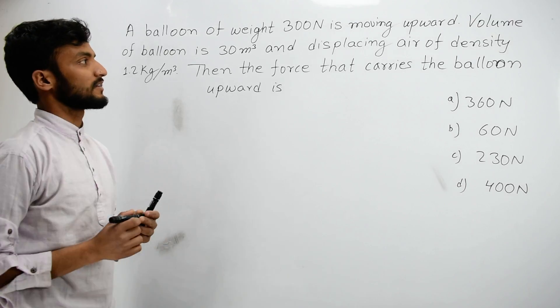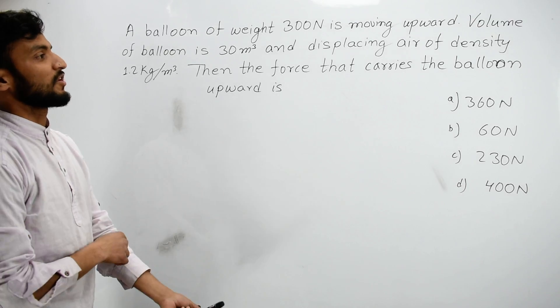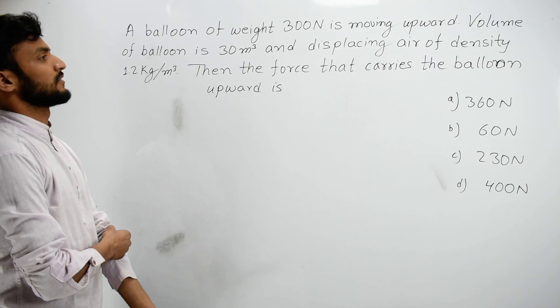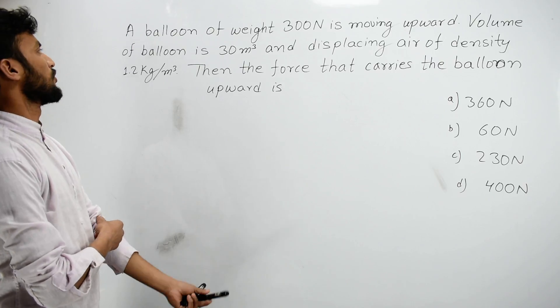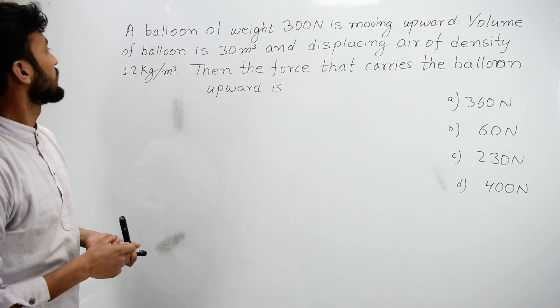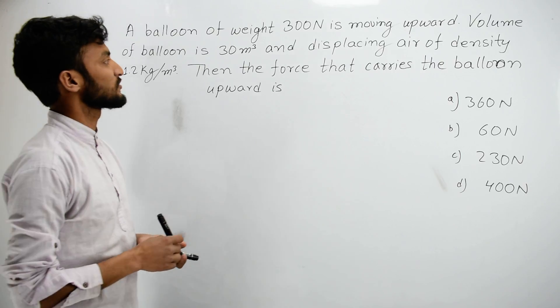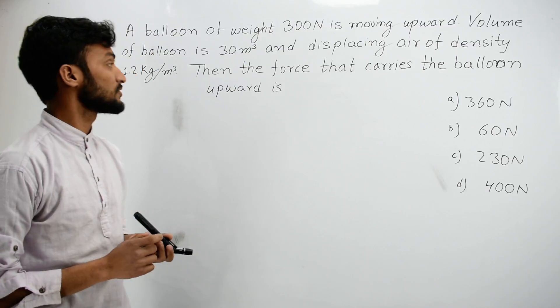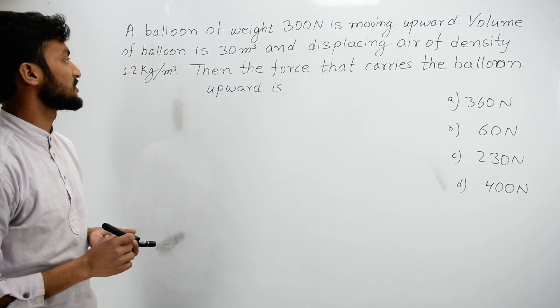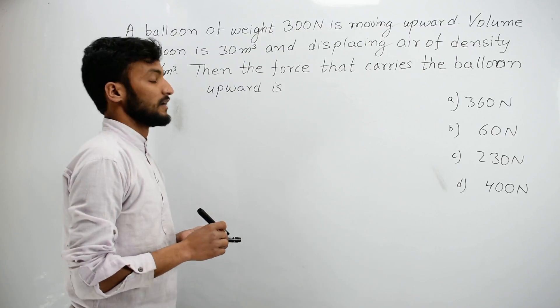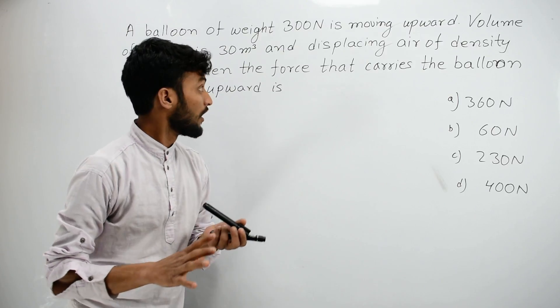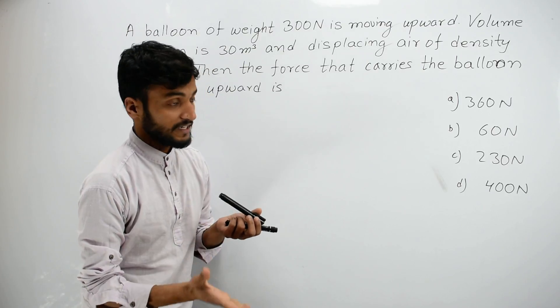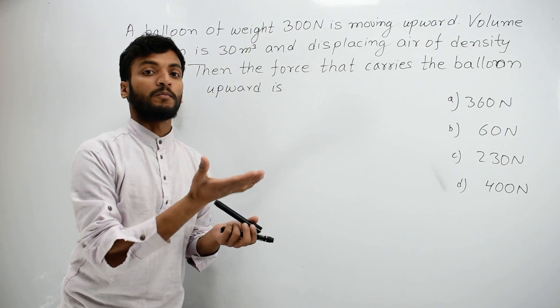A balloon weighing 300 Newton is moving upward. The volume of the balloon is 30 meter cubed and the displacing air density is 1.2 kg per meter cubed. Then the force that carries the balloon upward.